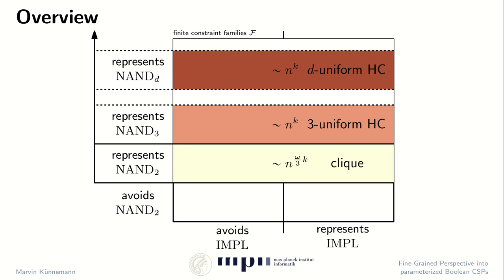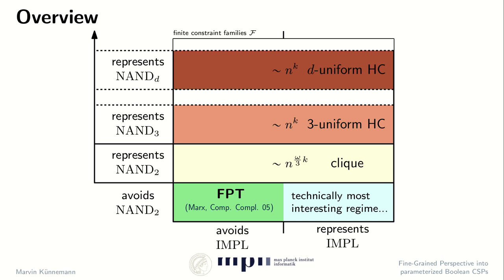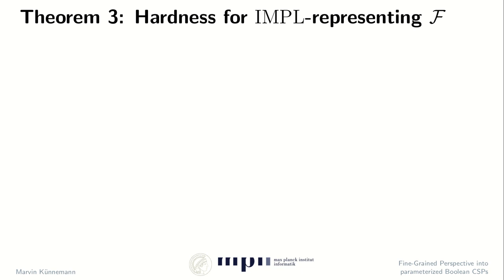As hinted at earlier, this decision now only depends on the following question: does the constraint family avoid the binary implication, or does it represent the binary implication function? For the first case, Daniel Marx in his previous work already gave a fixed parameter tractable algorithm. The more interesting regime for us is the case where the constraint family does represent the binary implication function.